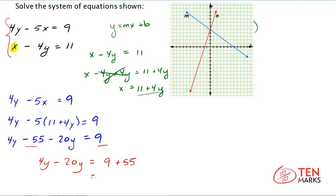9 plus 55 is 64. So you have 64 on the right side. And I'm going to combine these two terms. So you have 4y minus 20y and you get negative 16y. To solve for y, divide both sides by negative 16. And what you get after you do that is y equals negative 4.